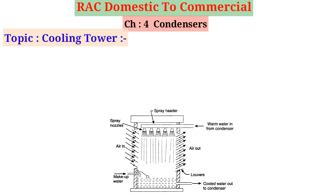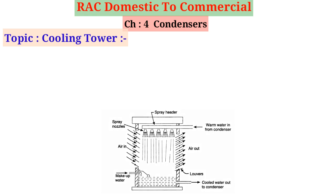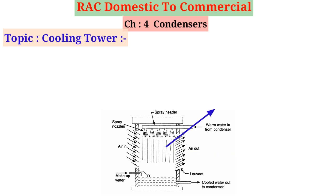Simply, the cooling tower is the system that accomplishes this process. It transfers heat from the condenser water to the atmospheric air. Most of the heat transfer is accomplished by the evaporation of a small percentage of the condensing water into the atmosphere. The heat required for evaporation is taken from the bulk of condenser water, thus cooling it.